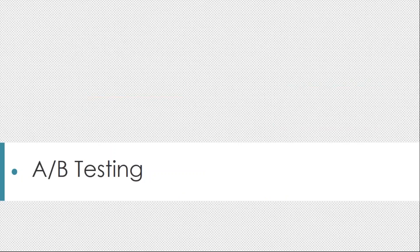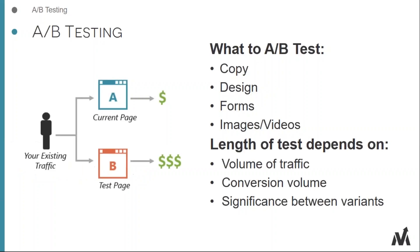Next, let's talk about A/B testing and how it works to achieve that increase in conversion rate. A/B testing takes your existing traffic and shows 50% of visitors one version of a page, and the other 50% a slight variation. Over time you gather data to see which version performs better — more sales, more leads, or whatever your conversion goal is. You can test copy, design, forms, images, videos, and much more.